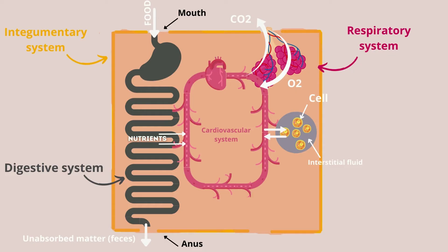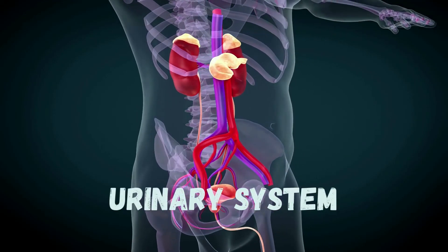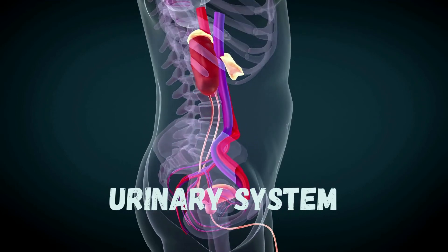The digestive system breaks down the food that we eat into nutrients that are then absorbed by the blood. Similarly, the blood absorbs oxygen from the respiratory system through the thin walls of the alveolus. Both the nutrients and the oxygen are transported by the blood to the cells, which take the oxygen and the nutrients and give the blood the carbon dioxide and the wastes. The carbon dioxide is then transported by the blood to the respiratory system, which eliminates it. As for the wastes, they are also transported by the blood to the urinary system to be eliminated.